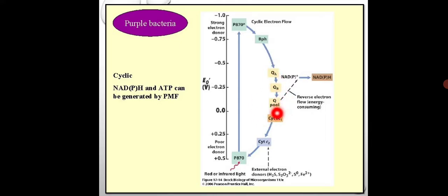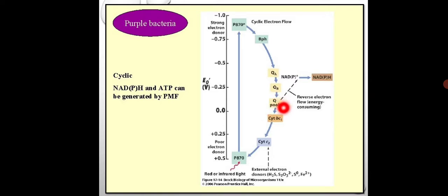The quinone pool is the center molecule. The E0 value for the quinone pool is about zero, meaning it is a weak electron donor as well as a weak electron acceptor. Its reduction potential is about zero volts, and it is insufficiently electronegative to directly reduce NAD+ to NADPH.